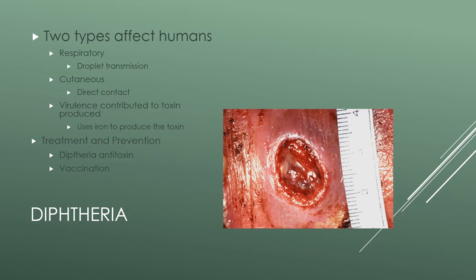Diphtheria also causes a pseudomembrane to develop in the respiratory tract, making it difficult to breathe. The toxin is introduced by lysogenic bacteriophages. Treatment should occur as soon as possible with a diphtheria antitoxin and antibiotics, along with respiratory support and patient isolation under droplet precautions. The illness lasts approximately one to two weeks, and recovering patients will begin to cough up and spit out the pseudomembrane. Complications include airway obstruction, respiratory failure, pneumonia, myocarditis, coma, and potentially death. Ten percent of patients who receive treatment die, and 50% on average die without treatment.